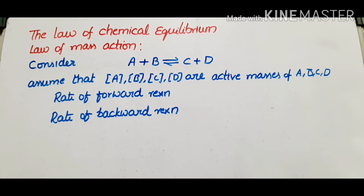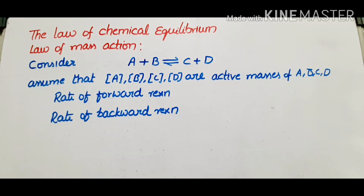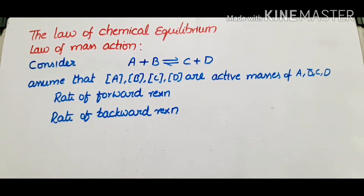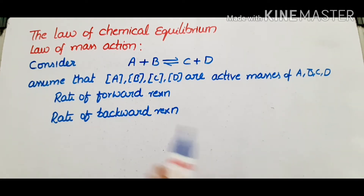Let us consider a reversible homogeneous reaction: A plus B equals C plus D. Here A plus B are considered as reactants and C plus D are products. These square brackets denote concentration — active masses. Concentration is nothing but the number of moles by volume. So active masses are denoted as A, B, C, D for reactants and products.